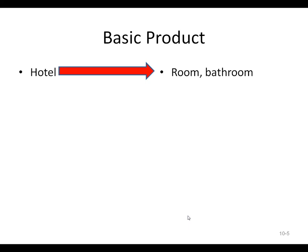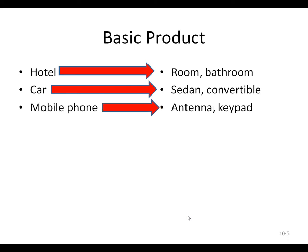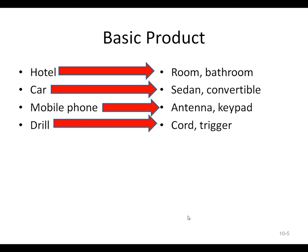Continuing with the basic product: for a hotel you get a room and a bathroom. A car gives you a sedan or convertible with four wheels, tires, a steering wheel, and seats. A mobile phone gives you a keypad or touch screen. A drill has a cord, a trigger, it's plastic and durable. That's the basic product.